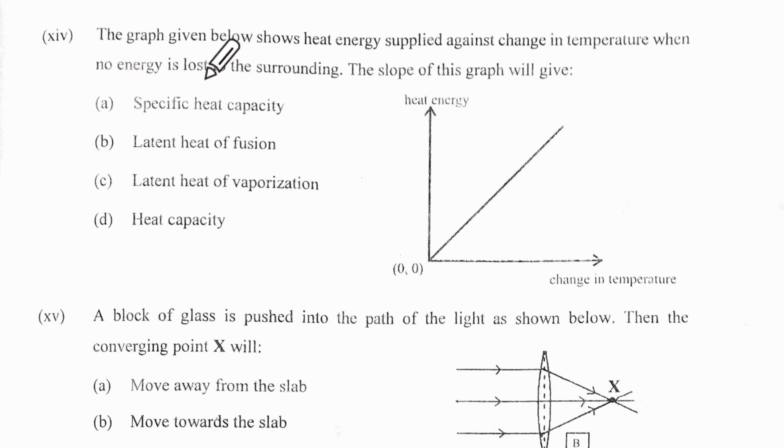14th one: the graph shows heat energy supplied against the change in temperature. So this is heat Q in joules and this is the change in temperature, delta T. Then they say slope of the graph. We know that slope is going to be delta Y upon delta X.